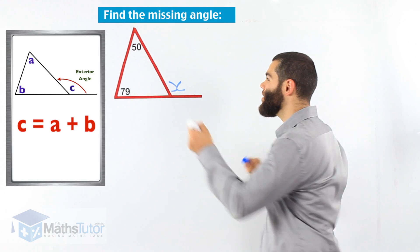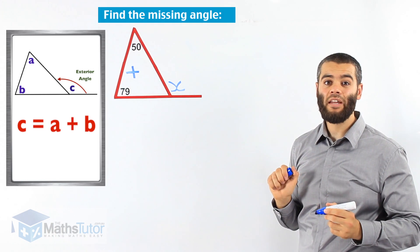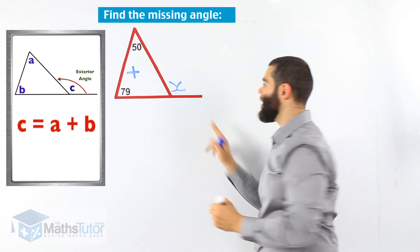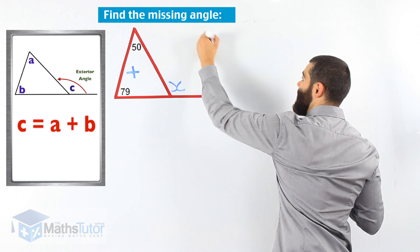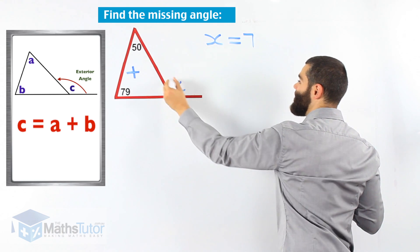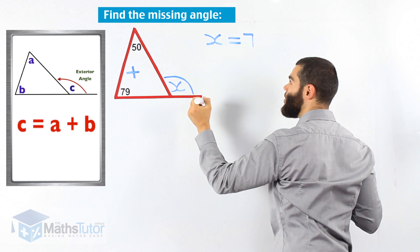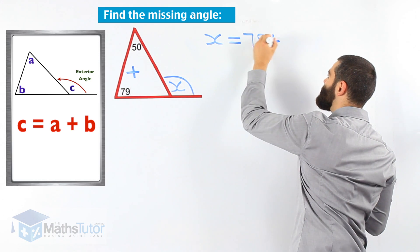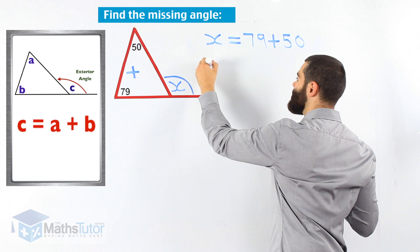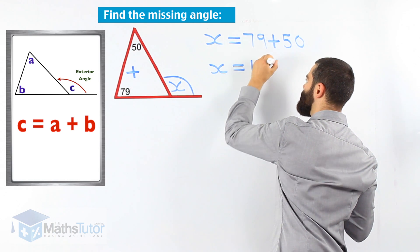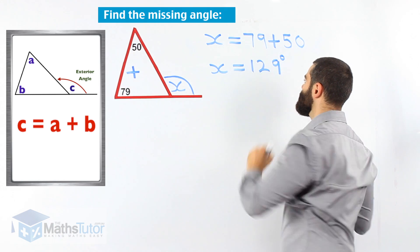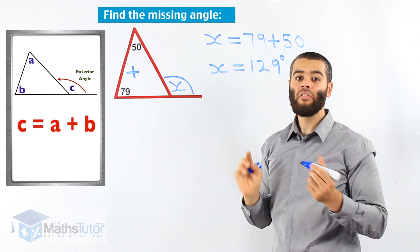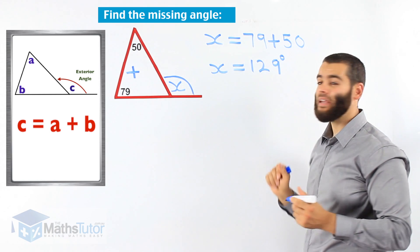These two interior angles — 50 and 79 — when we add them together, they equal the exterior angle outside. So x equals the exterior angle: x equals 79 plus 50. The two interior angles that are opposite the exterior angle add up together and make 129 degrees.